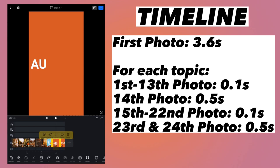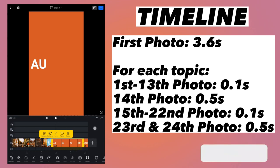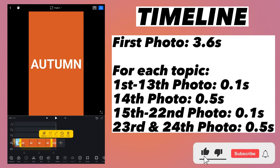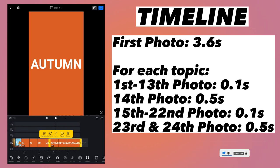Now select the first photo and drag it to make it 0.5 seconds, and do the same for the last one also. Basically, 0.5 second duration should only be for the 14th photo and the last two photos. Repeat this process for the other two topics — I will quickly add those and show you the timeline later.